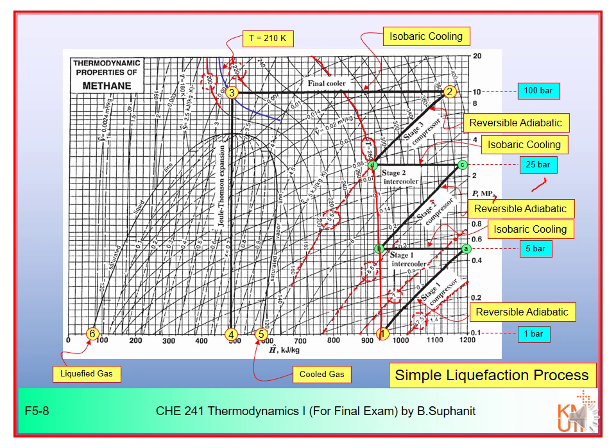After the cooler, the gas is flashed through the expansion valve. For JT expansion, enthalpy is constant, so you move vertically from point three down to point four at 1 bar — the flash drum pressure. At point four you have entered the two-phase region. The liquid product is at number six and the remaining vapor exits at number five.